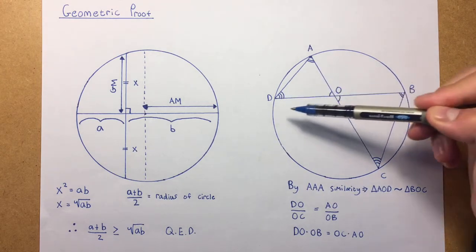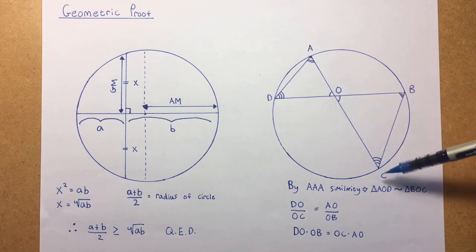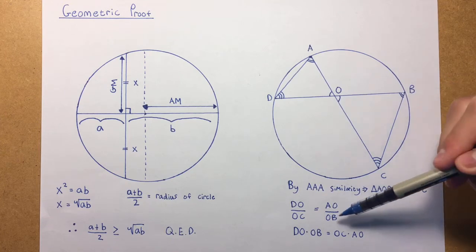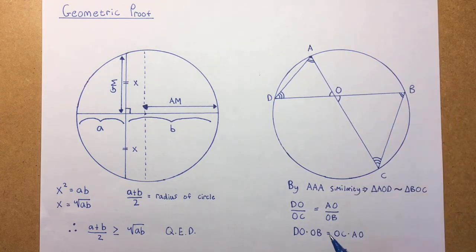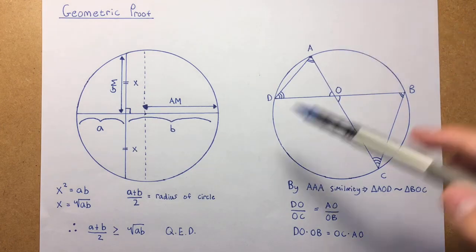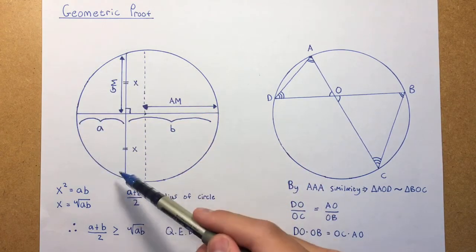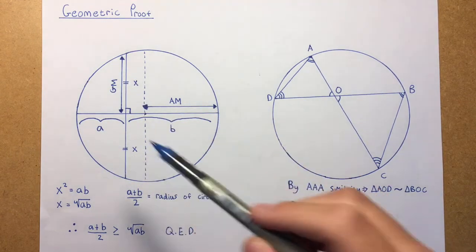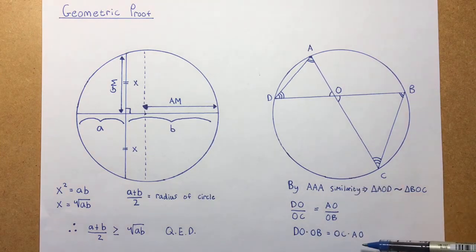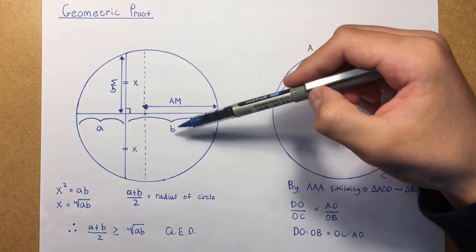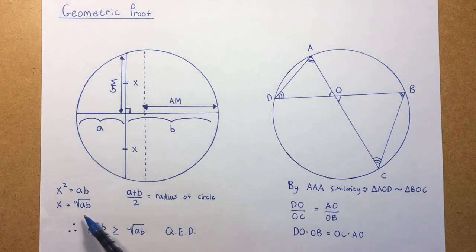So the ratio of DO to OC will be equal to AO to OB, as we can see here. So cross-multiplying this, we obtain that DO multiplied by OB is equal to OC multiplied by AO. We can use this fact, and if we drop lines from here to here and there to there, their corresponding angles will be equal, which will show us that X multiplied by X will equal A multiplied by B. So X will equal the square root of AB.